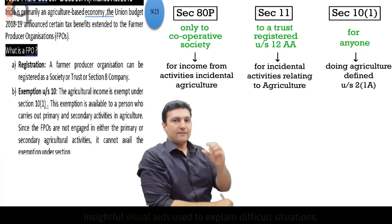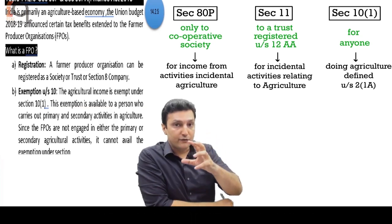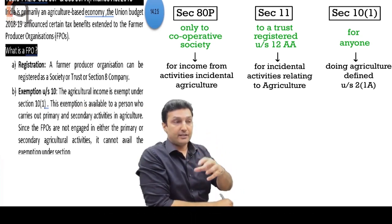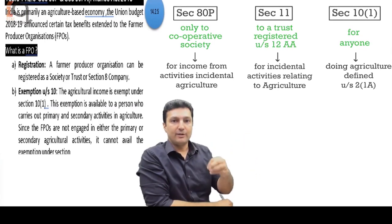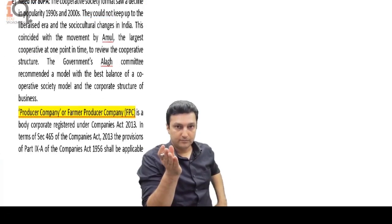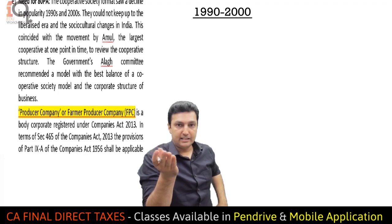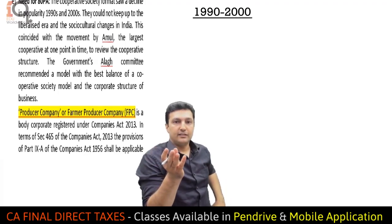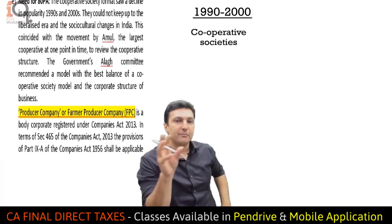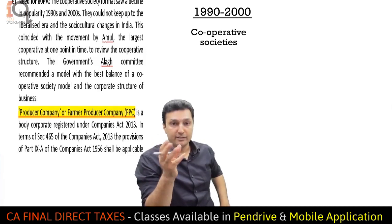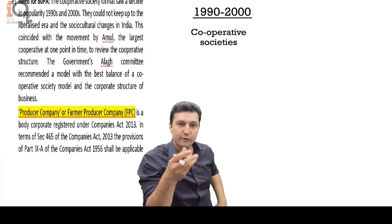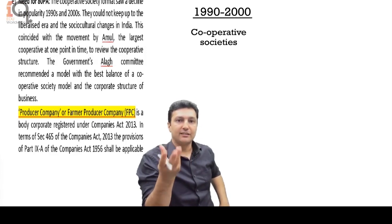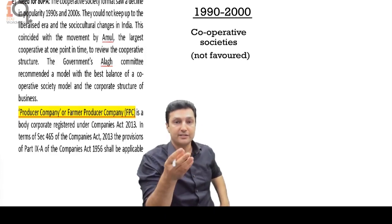What started happening was the structure of the cooperative society had a lot of approvals and a lot of political interference, which did not allow proper business to be conducted. Therefore, in the 1990s and 2000s, the cooperative structure went out of favor with the public at large. Even Amul, which we say is the largest cooperative, started reviewing — they were not being run as a professional entity, not able to take decisions or make profits.